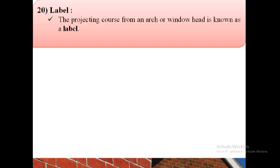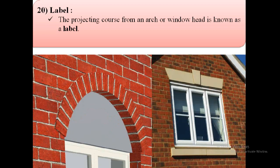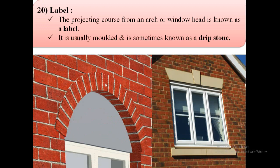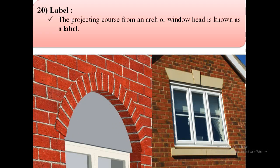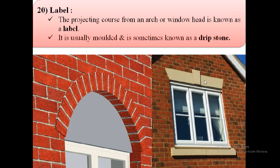The next term is label. The projecting course from an arch or window head is known as a label. As shown in the first image, this is the arch and its projecting course is the label. Above the window, the projecting course of the window head is also the label. It is usually molded and is sometimes known as a dripstone.